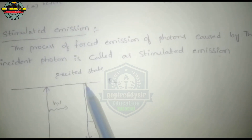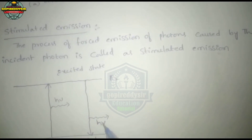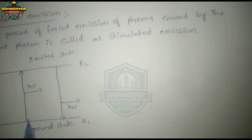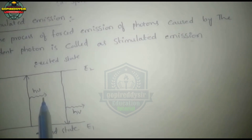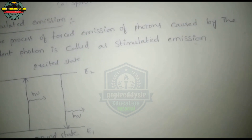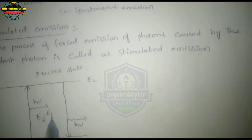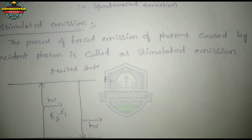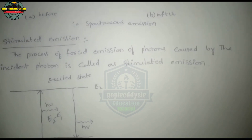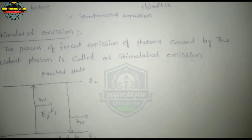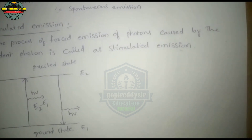In stimulated emission, an atom in the ground state absorbs photon energy and gets excited. Then it releases photon energy equal to E2 minus E1. This is the stimulated emission. Comparing the two: in spontaneous emission the atom emits a photon on its own, but in stimulated emission the atom emits a photon due to an incident photon causing energy release.